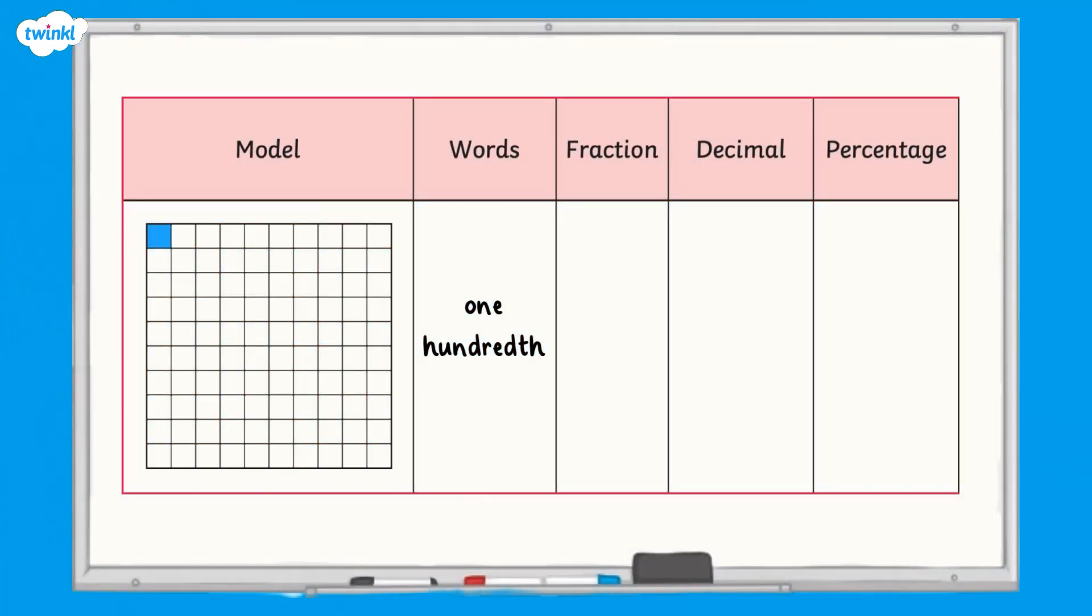Here we have one hundredth. One hundredth can be written as a fraction like this, or as a decimal like this, 0.01, as we have no tenths and one hundredths. It can also be written as a percentage. Percent means out of one hundred, so one hundredths can be written as one percent.